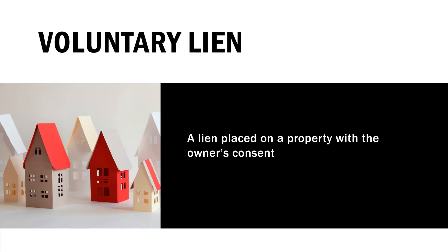V for voluntary lien. Voluntary means with your consent and approval, and a lien means you owe money and your property is collateral for the debt. So a voluntary lien is one that you enter with your consent. An example is a mortgage lien — you go out, take a mortgage, sign the paperwork saying your house is collateral for the debt, and now you have entered into a voluntary lien.